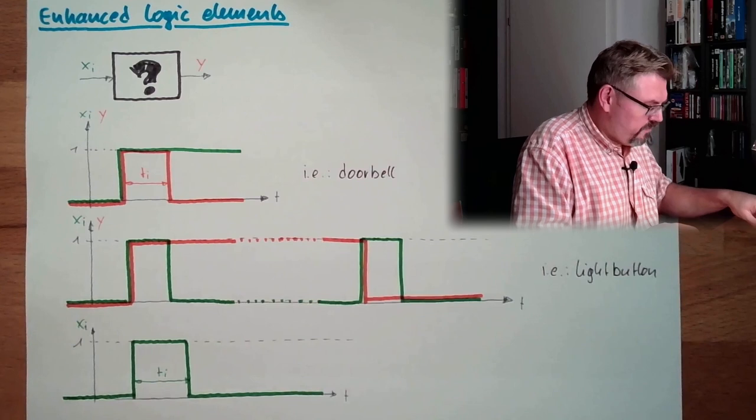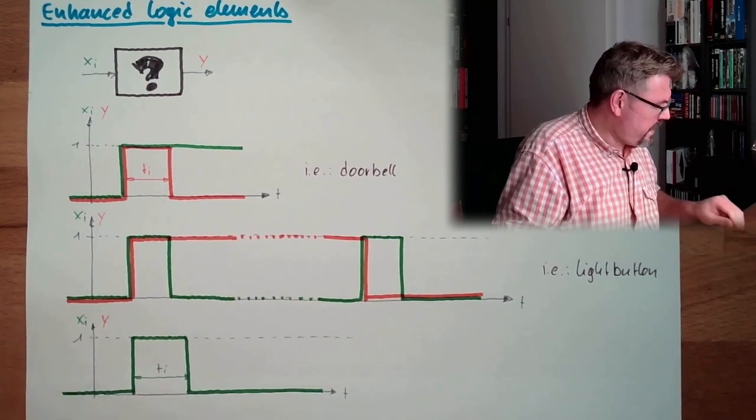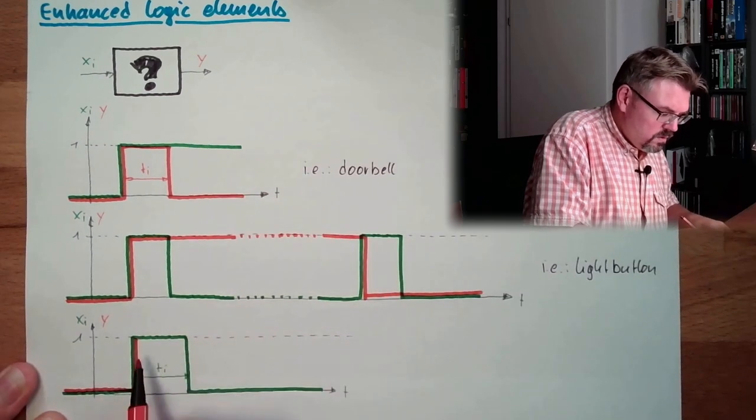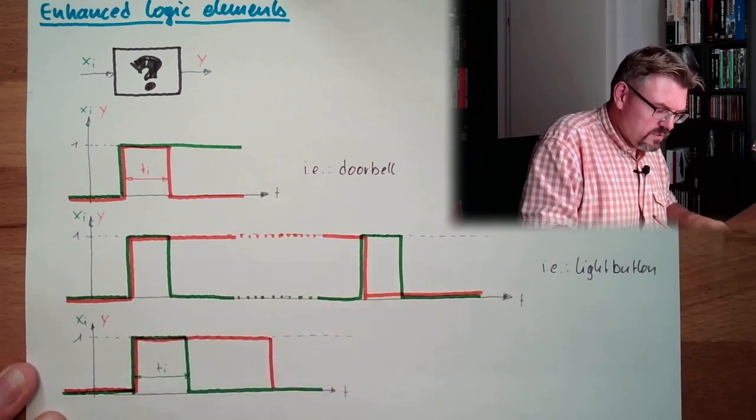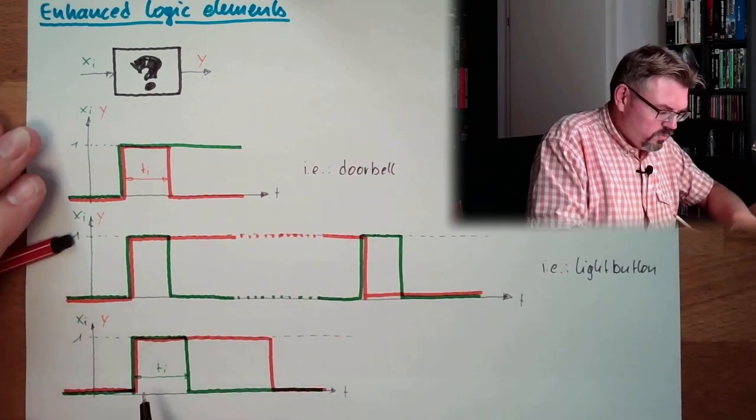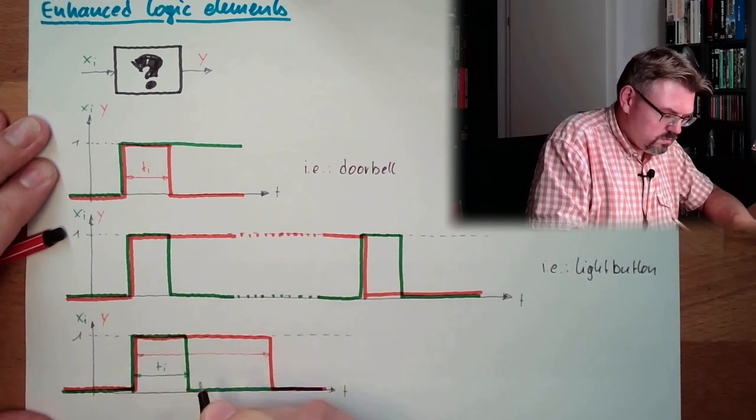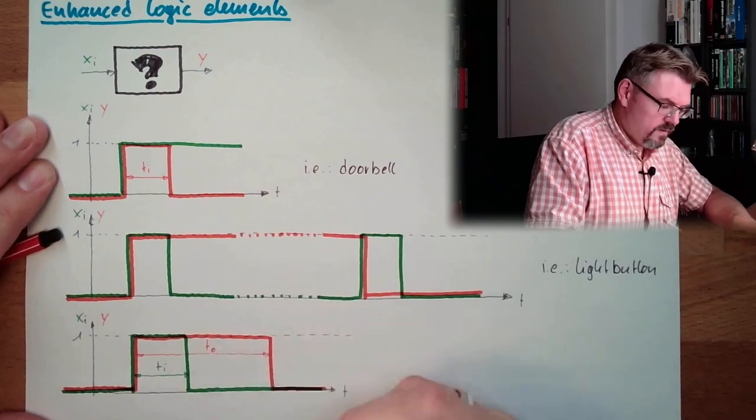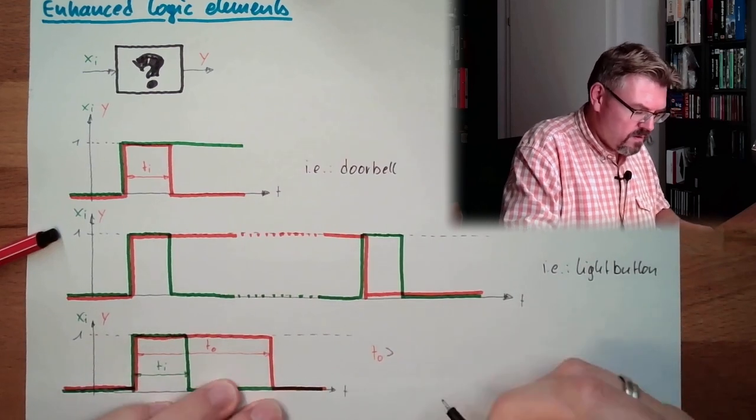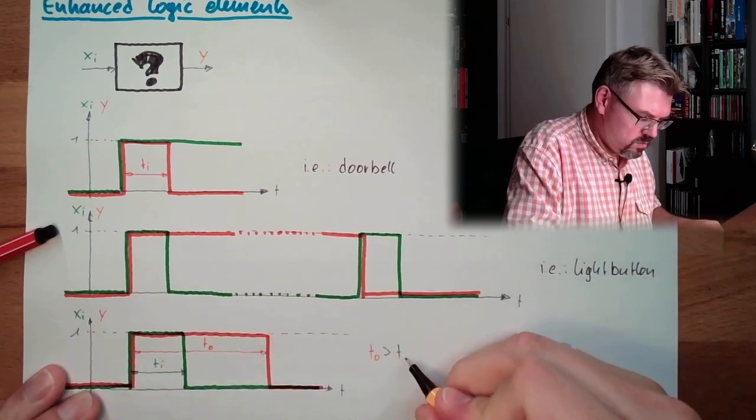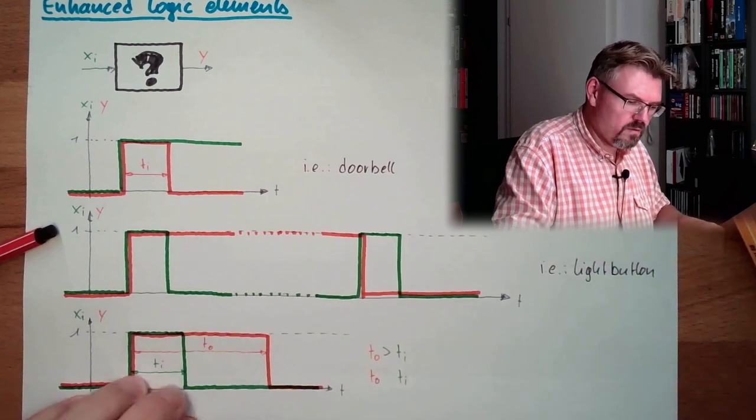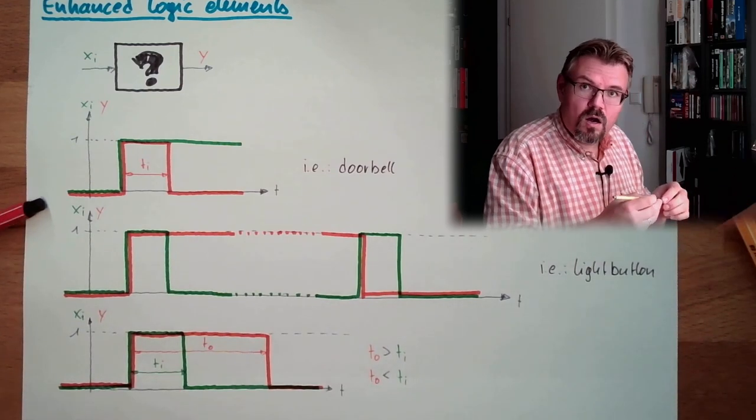And then we have our output. And our output would react like that, go to one. And after a while, it will also disappear. There is tr, the output length. Or d output might also be smaller than d input, it doesn't really matter. Both things are imaginable.